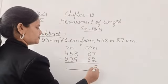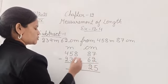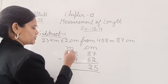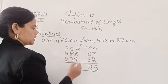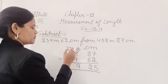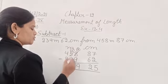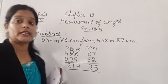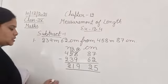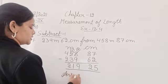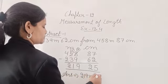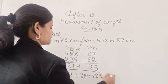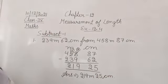7 minus 2 is 5. 8 minus 6 is 2. 8 minus 9 is not possible, so if we borrow from here, this will become 4 and this will become 18. 18 minus 9 is 9. 4 minus 3 is 1. 4 minus 2 is 2. So after subtracting 239 meter 62 centimeter from 458 meter 87 centimeter, you will get 219 meter and 25 centimeter.